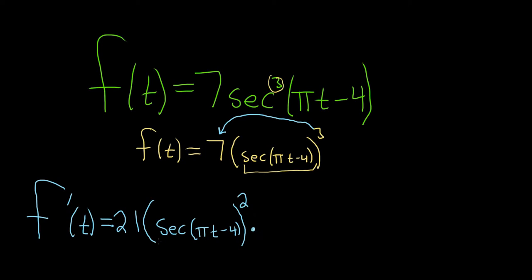Now times the derivative of the inside. So now we're focusing just on the derivative of the inside. The derivative of secant is secant tangent. So we have secant of pi t minus 4, tangent of pi t minus 4. And then now we have to multiply it by the derivative of the inside again. Well, the inside function is pi t minus 4.